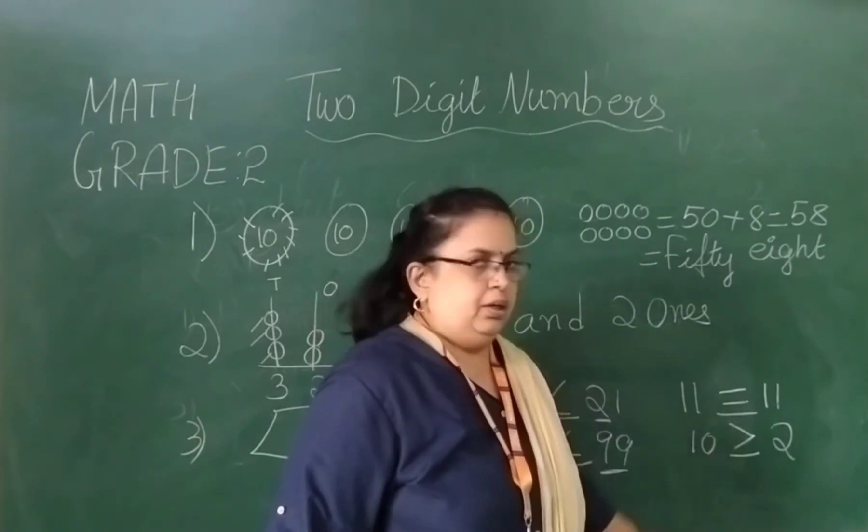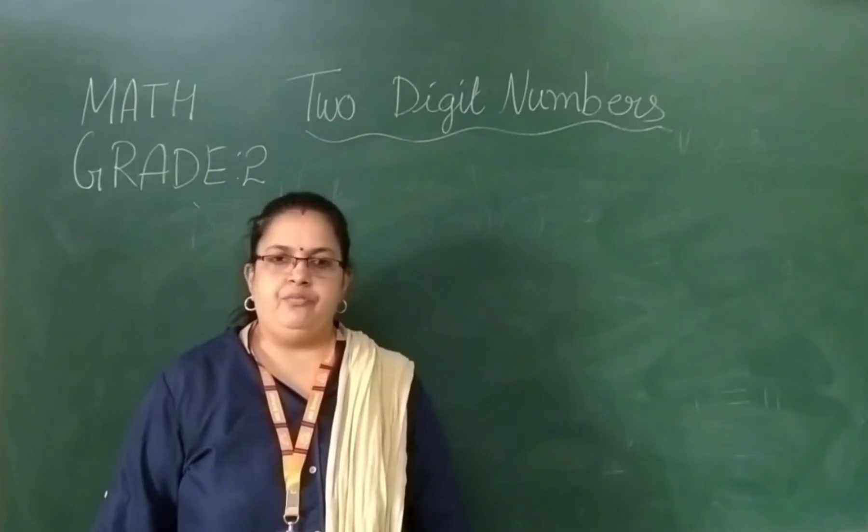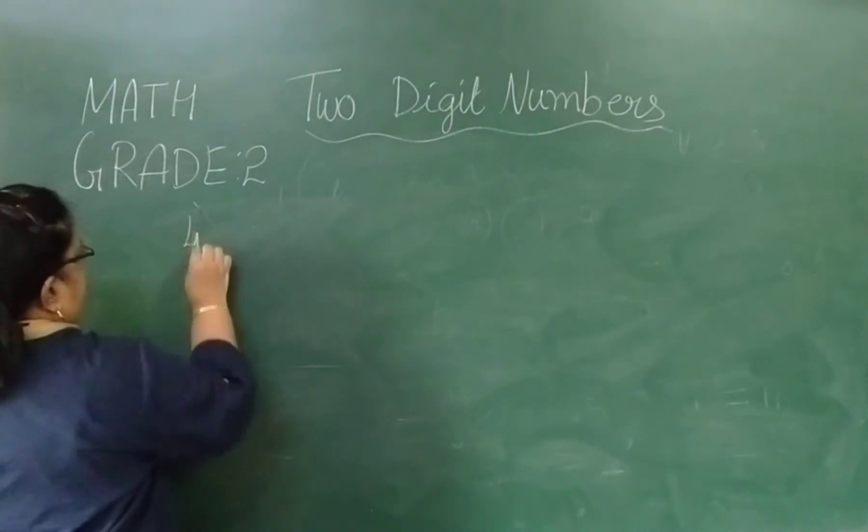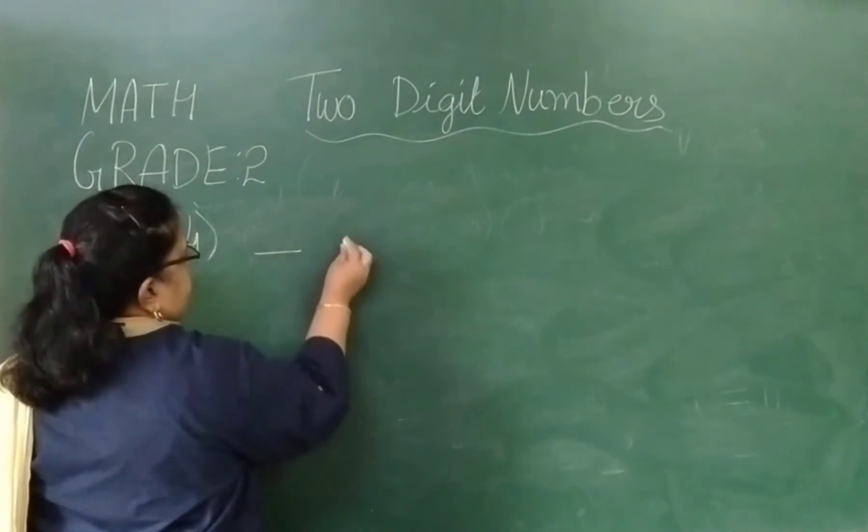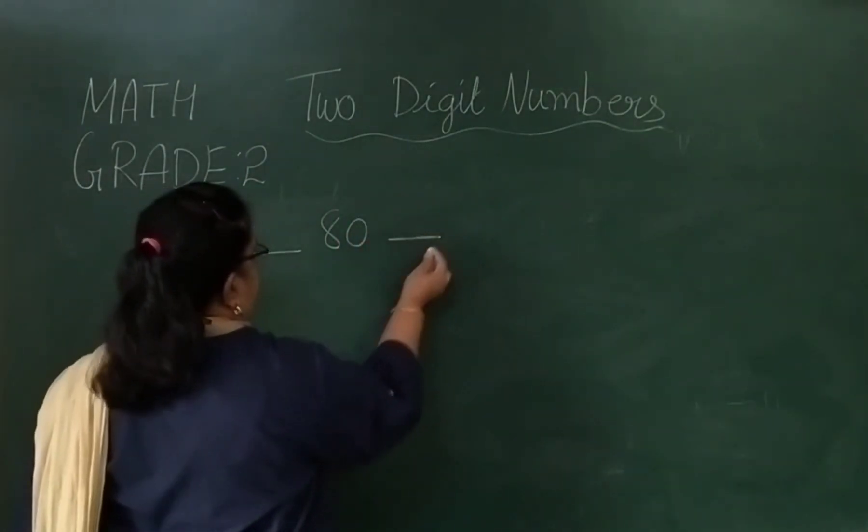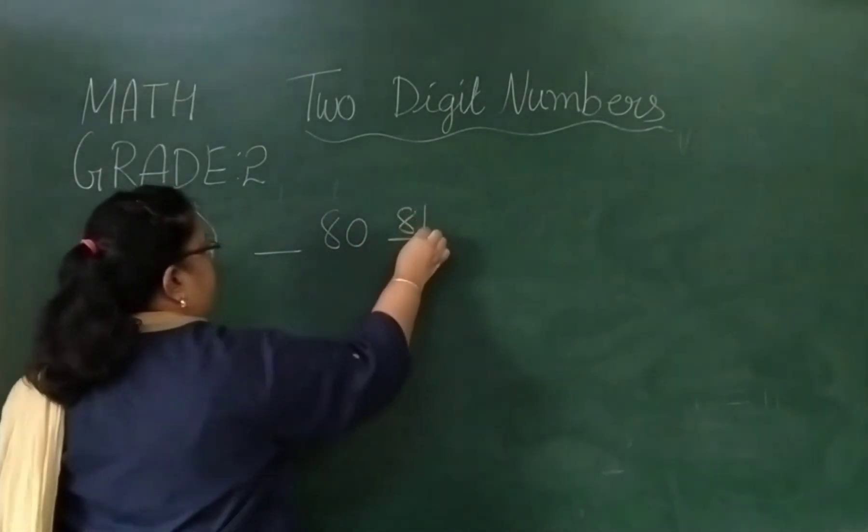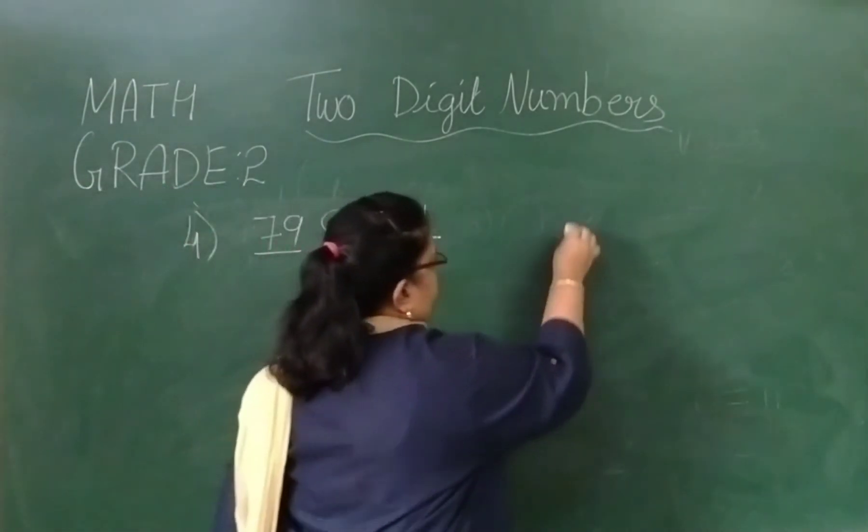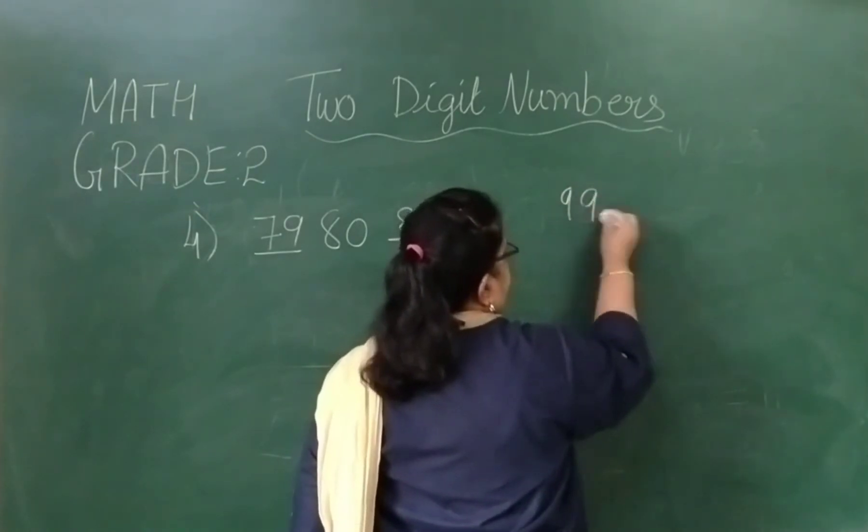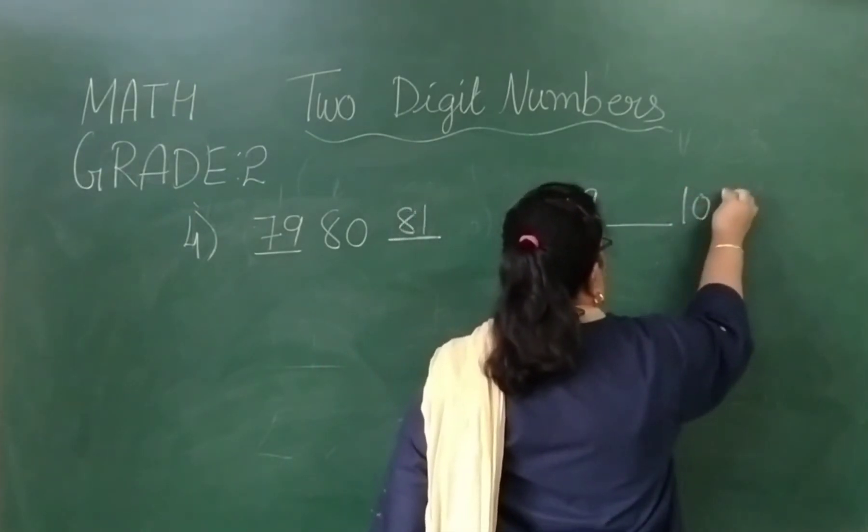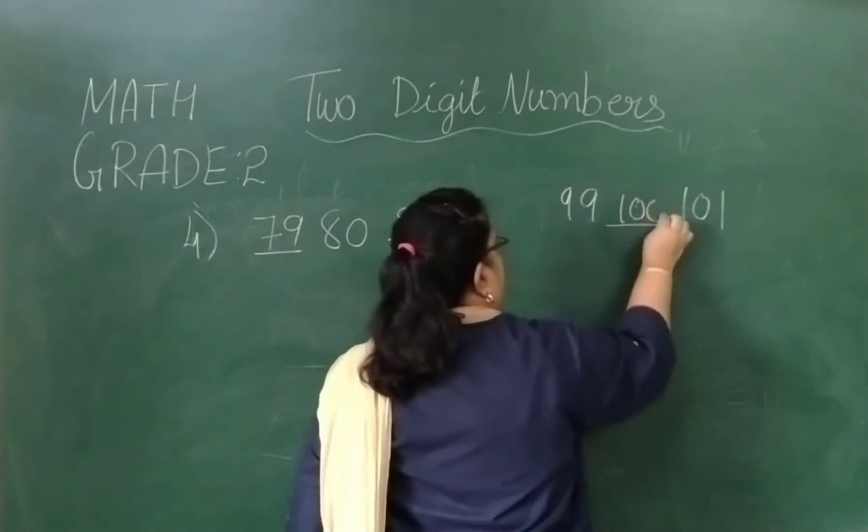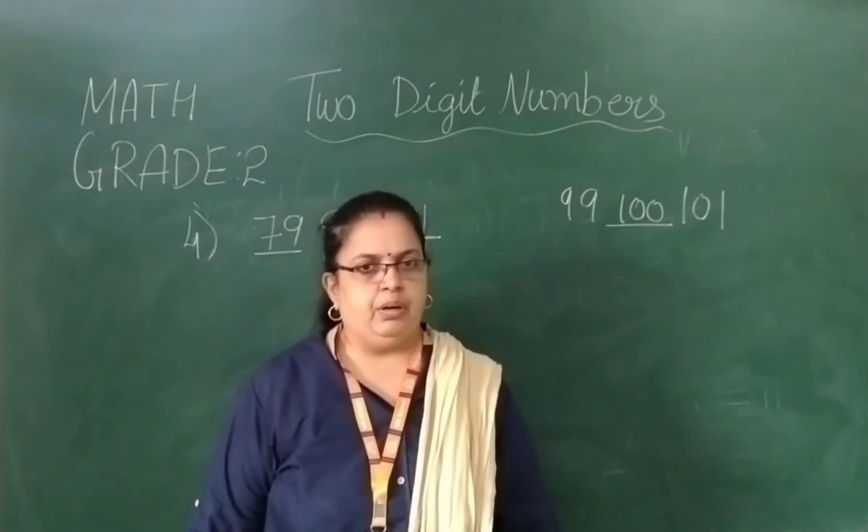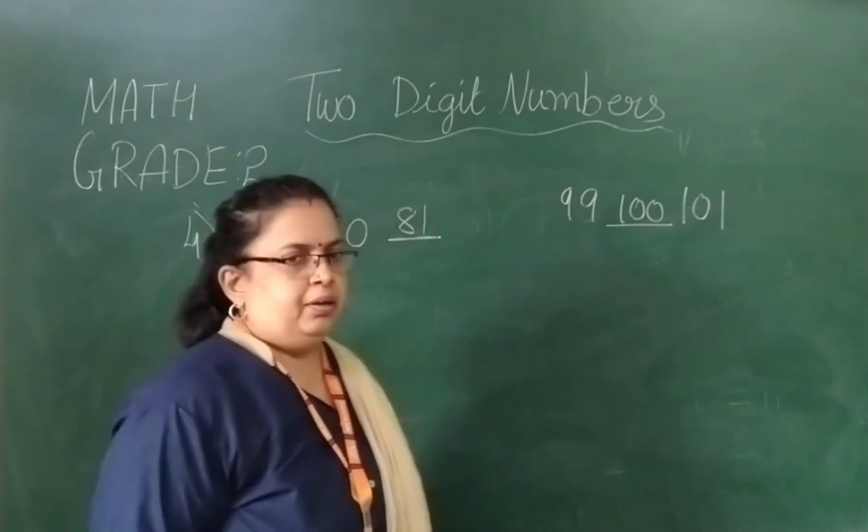Then comes after number, before number, and between. It is number 4. Here you can write 80. We have given, suppose, after 80 it is 81. Before 80 it is 79. Come to the next one, it is 99 blank and 101. After 99, it is 100.